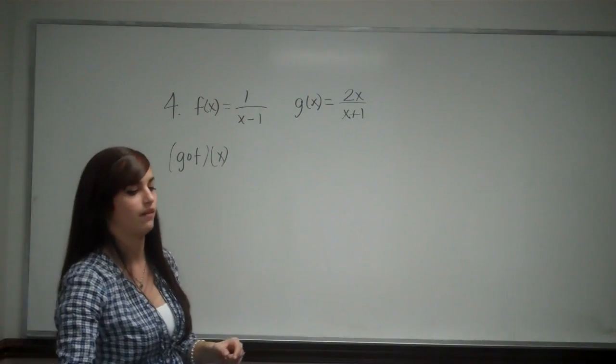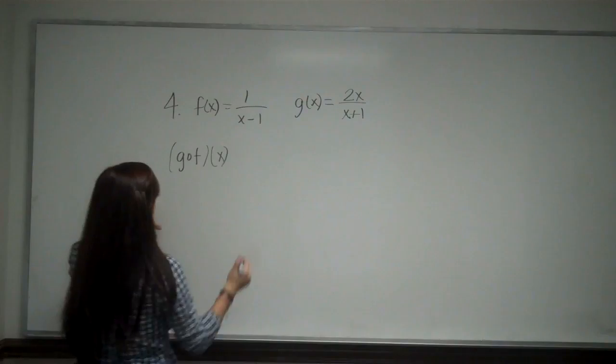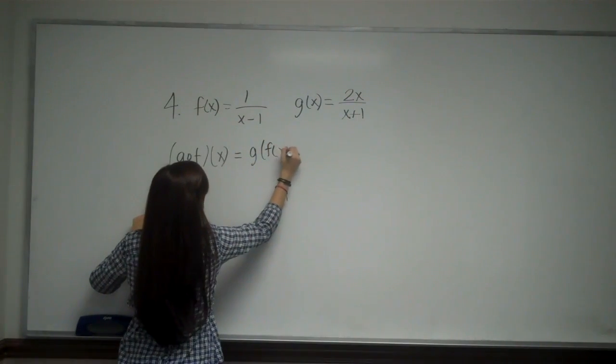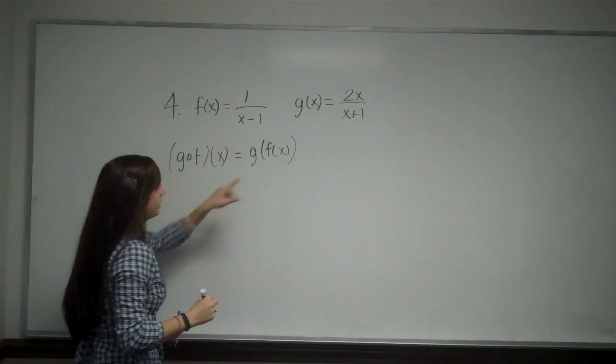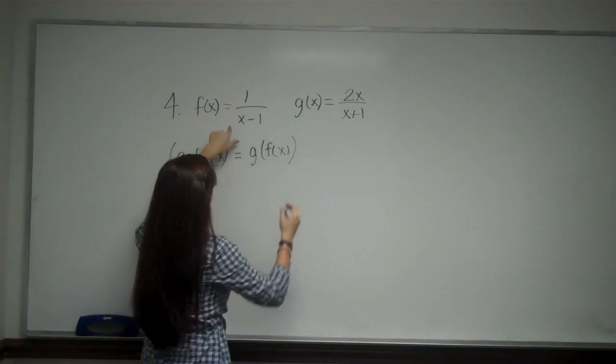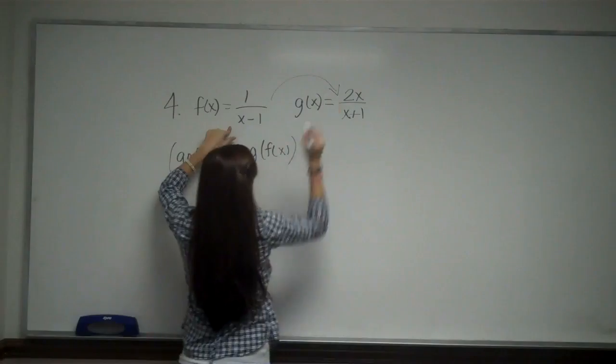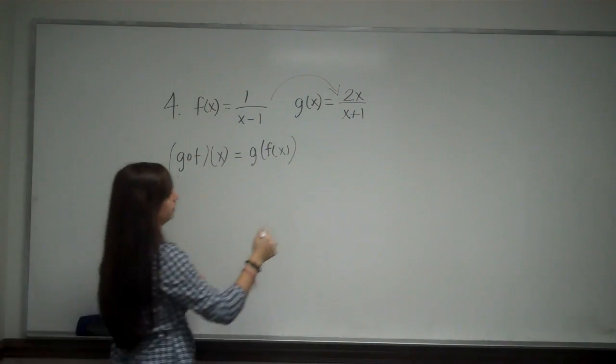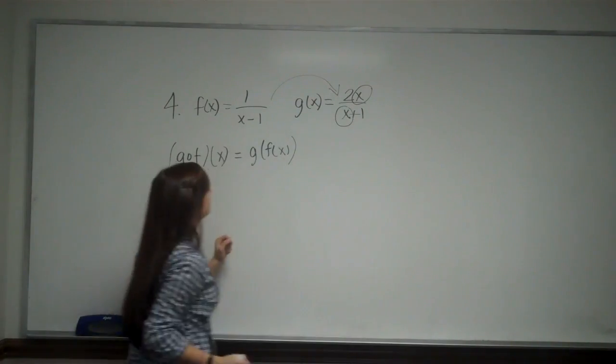So first let's deal with g of f of x. When I see this, this is also the same as g of f of x. That means f of x is replacing x in g. So I'm applying f of x into g. When I do that, I plug it in every time I see x, which is in this place and this place.